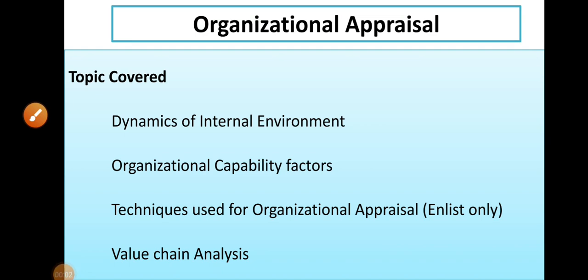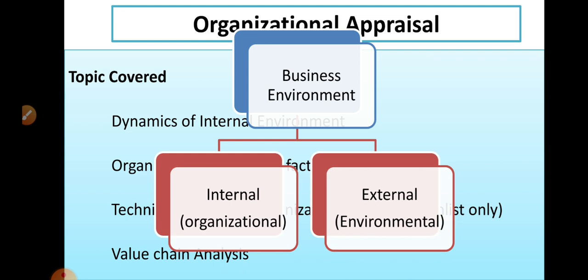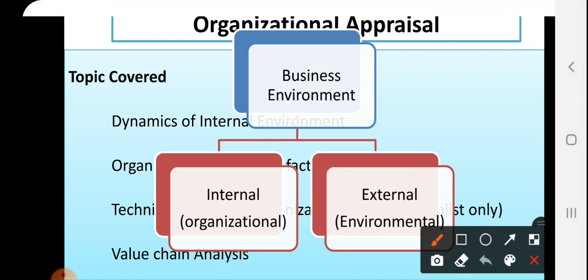Hello friends, I am Professor Shivaji Valki. From the last few sessions of strategic business management, we have started with the business environment topic. Business environment is a surrounding condition, circumstance, external factors, and internal factors which influence your business. This business environment is divided into two categories: internal and external.